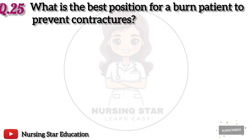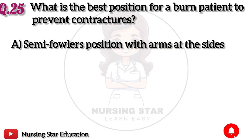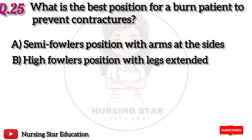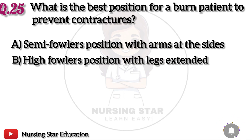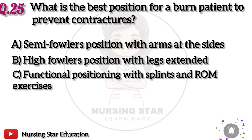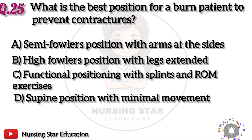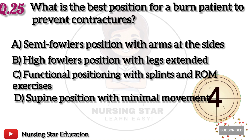Question 25: What is the best position for a burn patient to prevent contractures? Option A: Semi-Fowler's position with arms at the sides. B: High-Fowler's position with legs extended. C: Functional positioning with splints and ROM exercises. D: Supine position with minimal movement. The correct answer is C: Functional positioning with splints and ROM exercises.